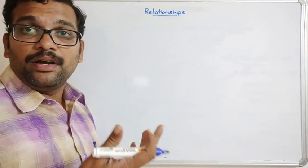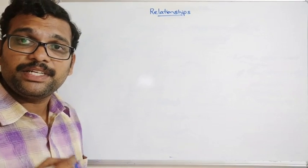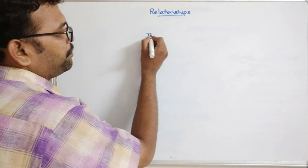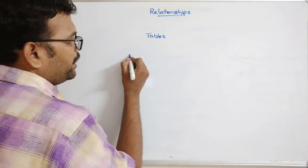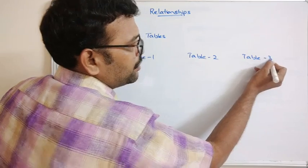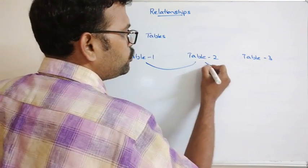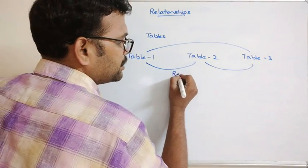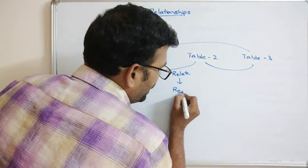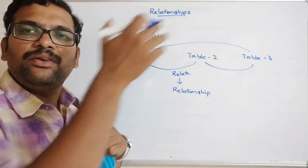First, why do we require relationships? In a relational database management system, data is represented in terms of rows and columns, and we call them tables. There will be multiple tables for the data — table one, table two, table three, etc. The complete data is divided into different tables, and we have to relate these different tables from one record to another.